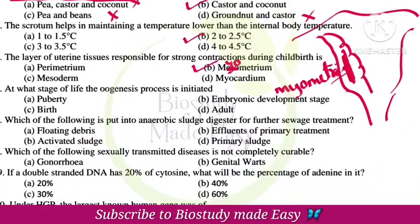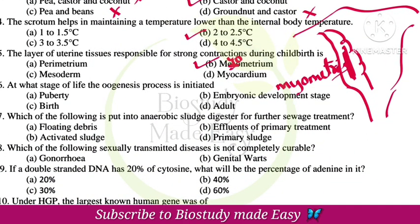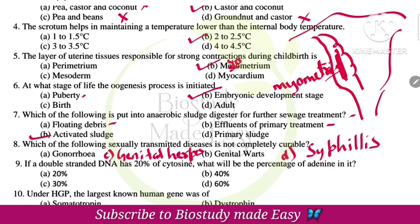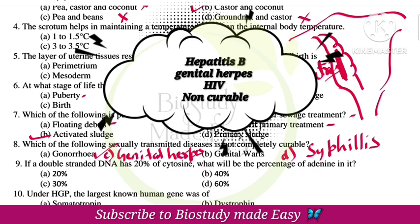At what stage of life is oogenesis initiated? It starts at the embryonic stage. Spermatogenesis starts at puberty. Next, which of the following goes into the anaerobic sludge digester — that is activated sludge from primary treatment going into secondary treatment. Which sexually transmitted disease is not completely curable? The correct answer is option C — genital herpes. Note: genital herpes, hepatitis B, and HIV are the 3 diseases that cannot be completely cured.